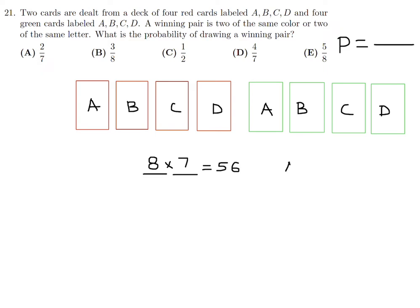But in this question, order does not matter. If I deal a red A first and then a green C, that is the same as dealing green C first and then red A — the person gets the same hand. Because order doesn't matter, 56 double counts, so it's actually 28 unique hands. Our denominator is 28.